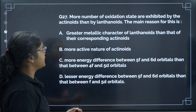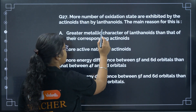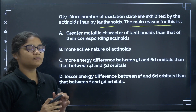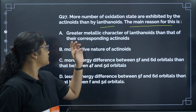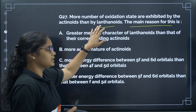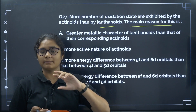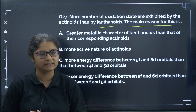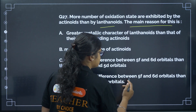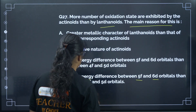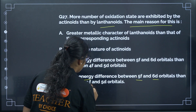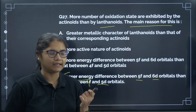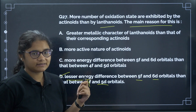Question 27: More oxidation states are exhibited by actinoids than by lanthanoids. The main reason is the smaller energy difference between 5f and 6d orbitals compared to 4f and 5d orbitals in lanthanoids. This allows more electrons to participate in bonding, enabling variable oxidation states. The correct answer is option D.